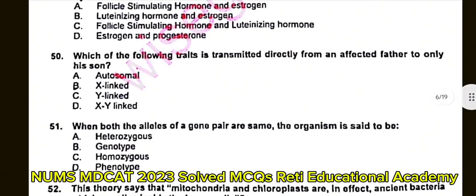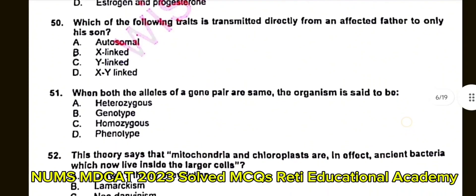Question number 50: Which of the following traits is transmitted directly from an affected father to only his sons? A. Autosomal. B. X-linked. C. Y-linked. D. XY-linked. The correct answer is C: Y-linked.